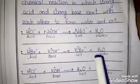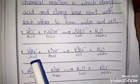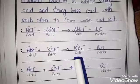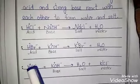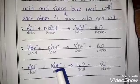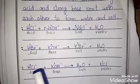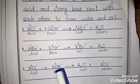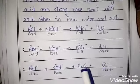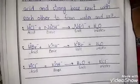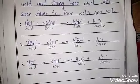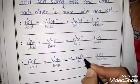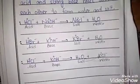Acid negative plus base positive gives salt. Third reaction: HCl and KOH — H⁺ and OH⁻ give water and KCl. Note: I have mistakenly written salt where this should be water — this mistake is not yours, it is mine.